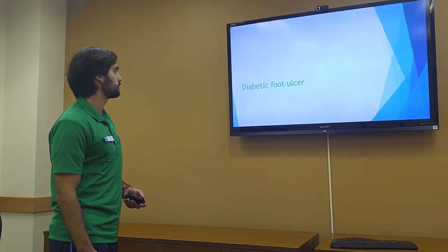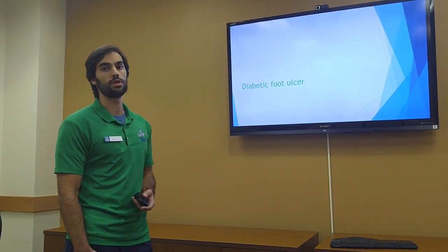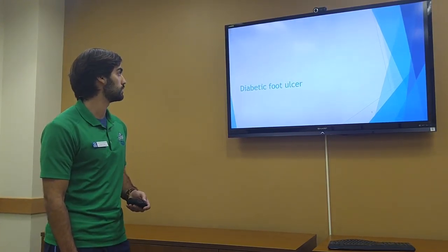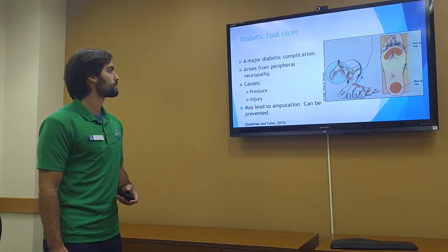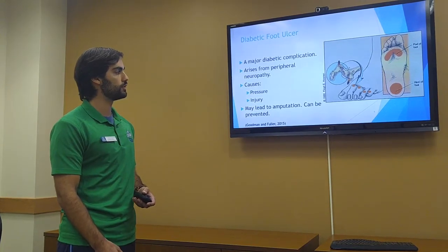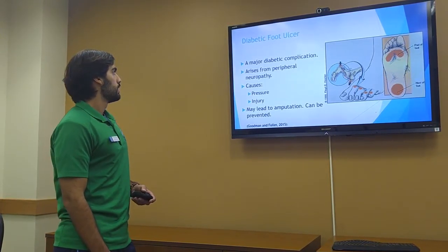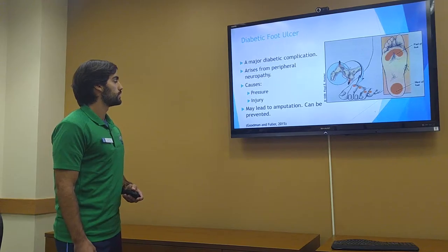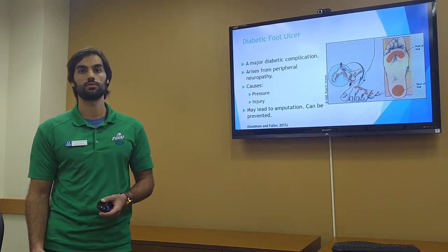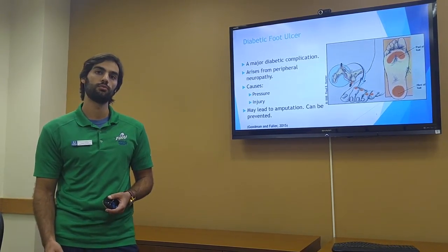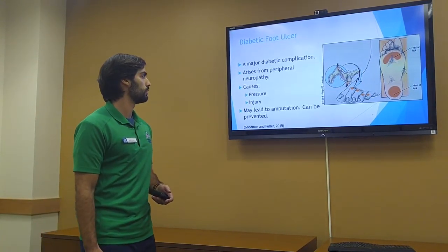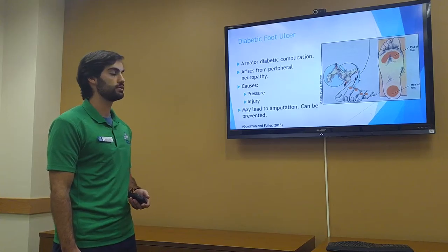Now let's talk about the diabetic foot ulcer. We know diabetes has many complications, one of which is the diabetic foot ulcer. Here's an image on the right showing many of the locations on the foot that are prone to ulcers. The diabetic foot ulcer arises from peripheral neuropathy, which is the loss of sensation in the extremities — the hands and feet — but with diabetics it mainly affects the feet. There are two main causes for these ulcers: pressure and injury.